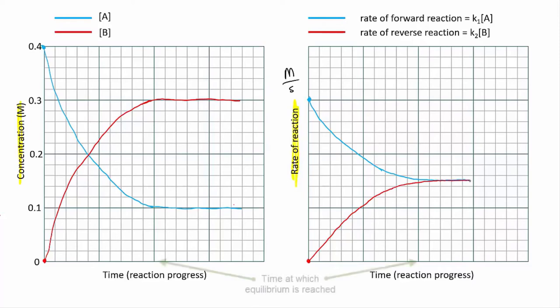When we reach this point, the concentrations of A and B are no longer changing. Since the rates are equal, neither species can win.